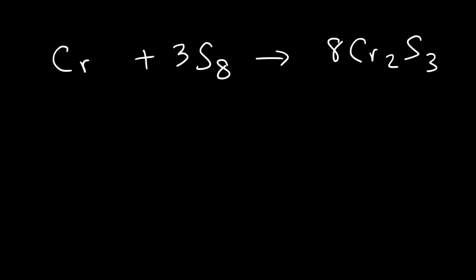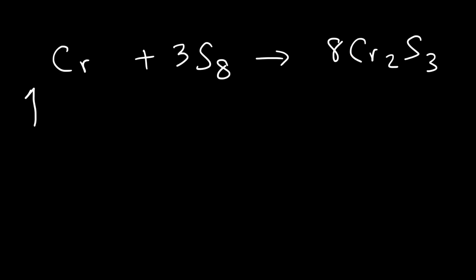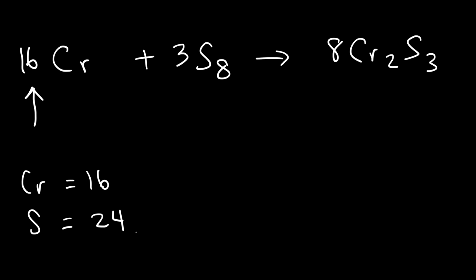Now we move on to balancing the chromium atoms. On the right side we have 8 × 2 = 16 chromium atoms. So we put a 16 in front of Cr. Now everything is balanced — 16 chromium atoms on both sides and 24 sulfur atoms on both sides.